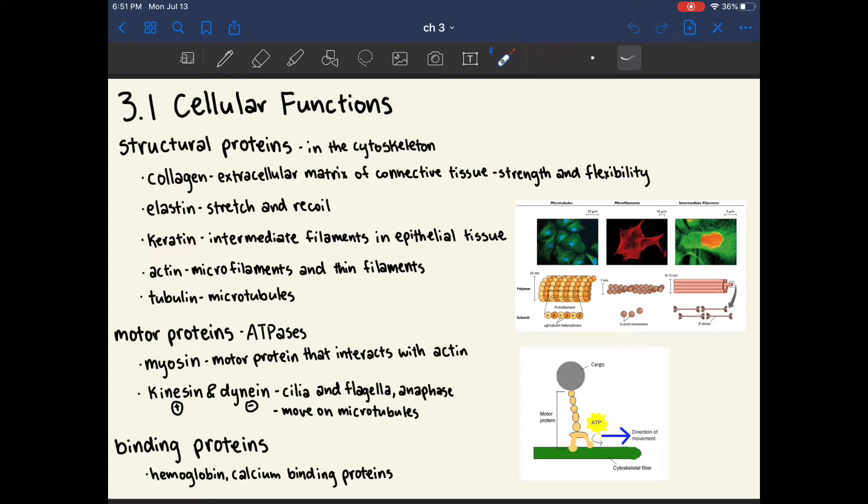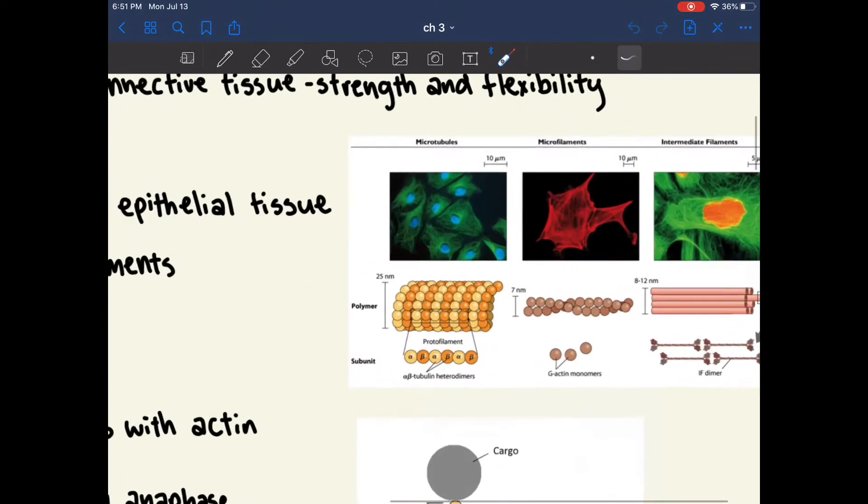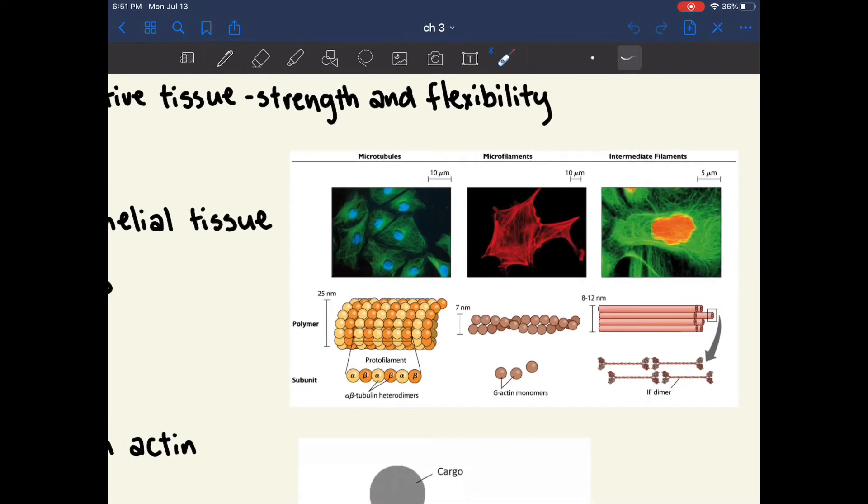Keratin is a protein that makes up the intermediate filaments of our epithelial tissue. Actin makes up the microfilaments and thin filaments, and tubulin makes up the microtubules. Here I've attached a photo of microtubules, microfilaments, and intermediate filaments, and these are the three components of our cytoskeleton.